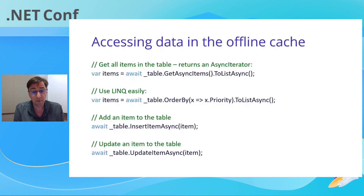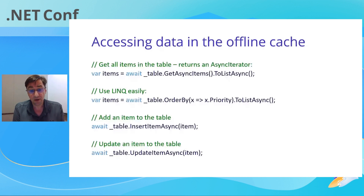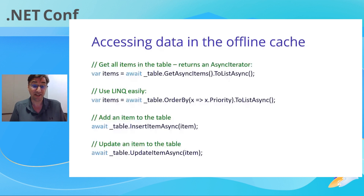And then you've got a set of operations to add, remove, and update items within the table. When you call these, the item is updated when you insert it. So for example, if you don't specify an ID, then the item ID will be set for you. When the items are pushed up to the service, you'll want to re-pull them from the offline cache because they will be updated with the latest 'updated at' and version.